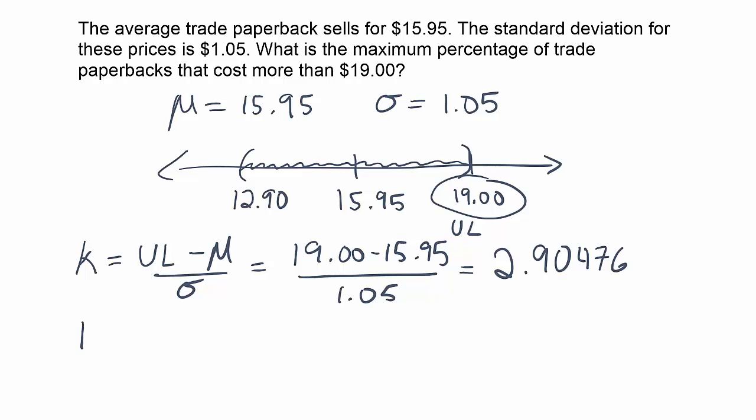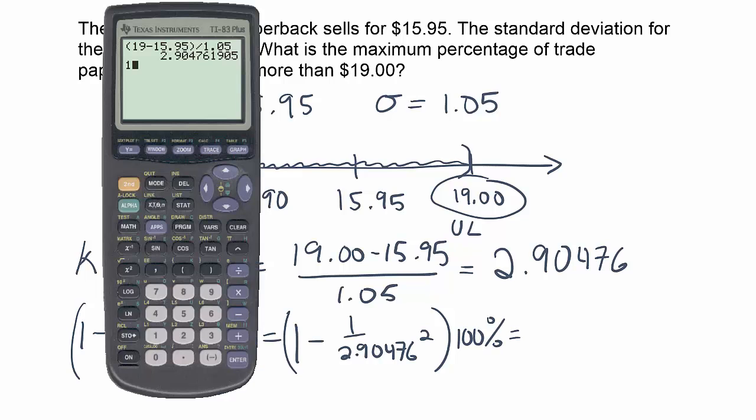And then the theorem says 1 minus 1 over k squared times 100%. And this will give you the minimum amount of data that's within that interval from $12.90 to $19. So let's do it: 1 minus 1 over 2.90476 squared, all that times 100%. So I'm going to do 1 minus 1 divided by, and in this calculator I can take the whole number there and put it right in the fraction so that when I square it, I'm not rounding at all. Press enter.